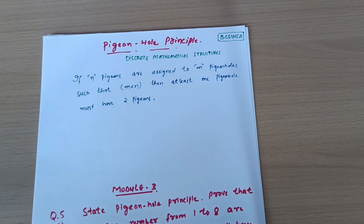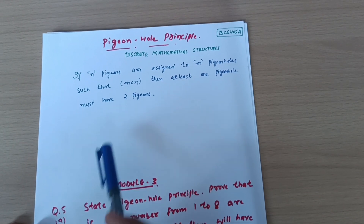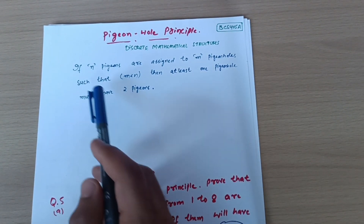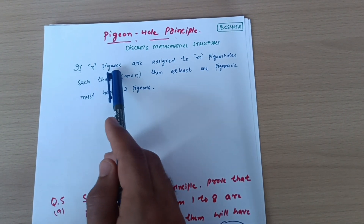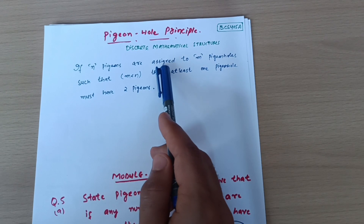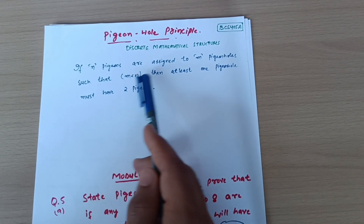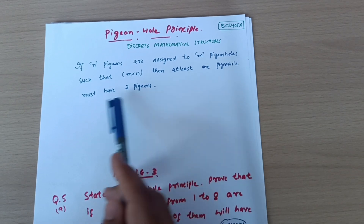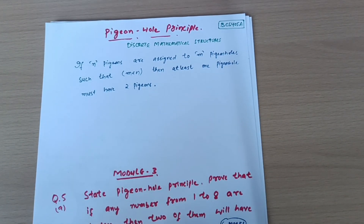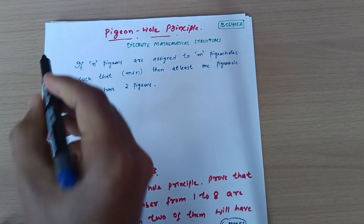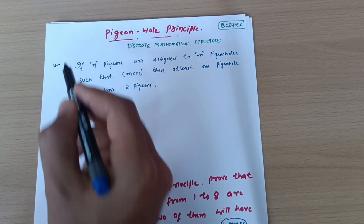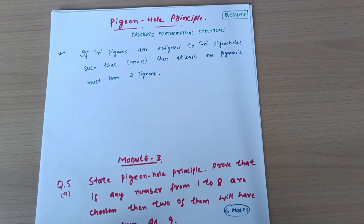This is a very simple principle which was proposed by Peter Dirichlet. It is also called Dirichlet's Principle. What it states: if n pigeons are assigned to m pigeonholes such that m is less than n, then at least one pigeonhole must have two pigeons. Don't worry about the statement if you are not getting it — let me give you an example.